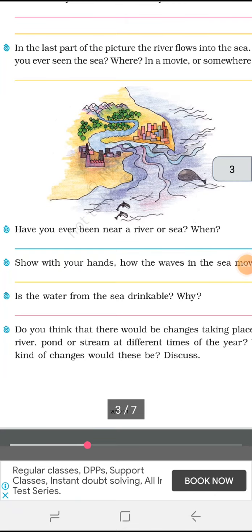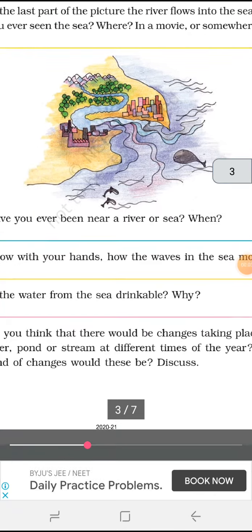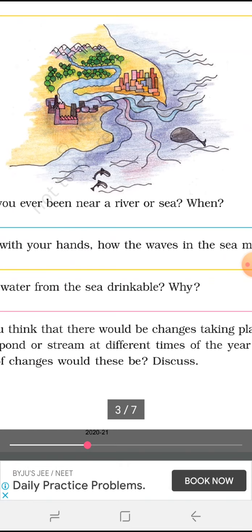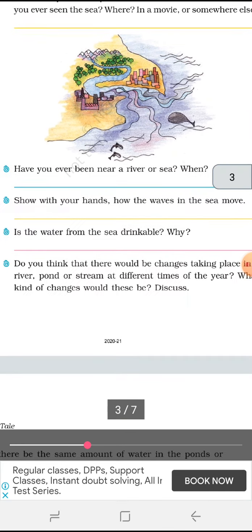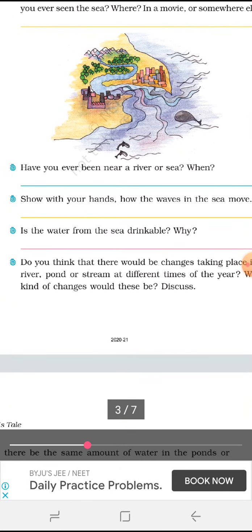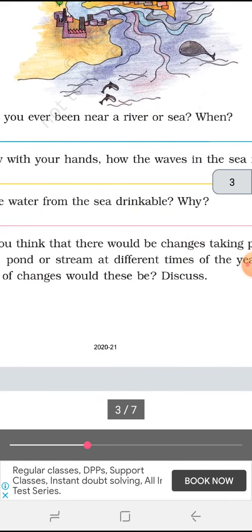Good morning children, welcome back to our EBS class. In the last video we were reading the chapter The River's Tale. I am again continuing with this chapter. The last question that was discussed in the video was, is the water from the sea drinkable or not, why? Water from the sea is not at all drinkable because they are salty, the salt is mixed in that water so it is not able to drink.